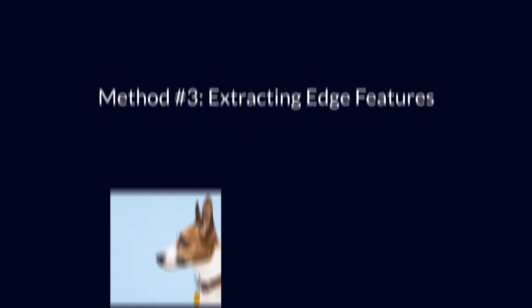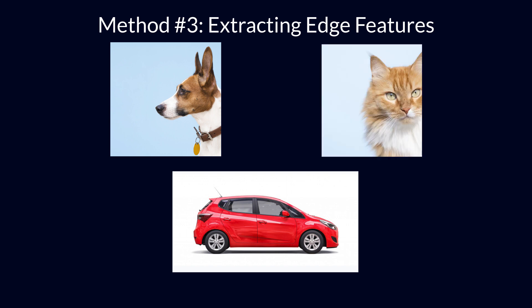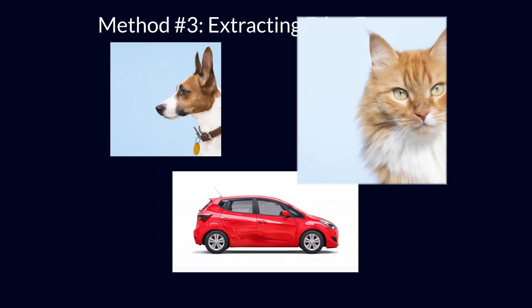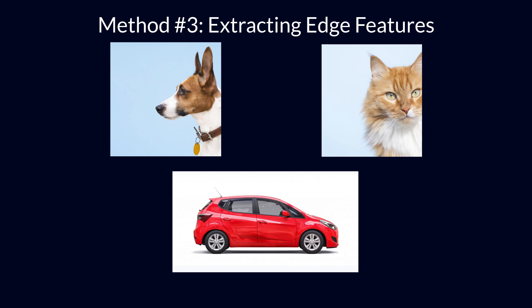Let us move to the third method called extracting edge features. Consider that we are given an image and we need to identify the objects present in it. As a human, we easily recognize the objects in an instant — a dog, a car, and a cat. What are the features that you considered while differentiating each of these objects? The shape could be one important factor, followed by color or size. What if the machine could also identify the shape as we do? A similar idea is to extract edges as features and use that as the input for the model.